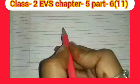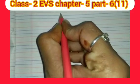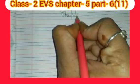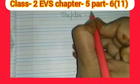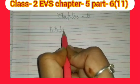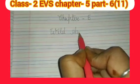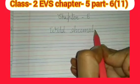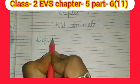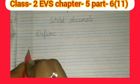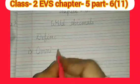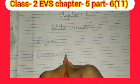Our next question is define the following. Open your copy. Write chapter number five. Write the chapter name: Wild Animals — W, I, L, D — wild animals. Now write the heading: Define. First word is omnivorous — O, M, N, I, V, O, R, E, S — omnivorous. How are omnivorous animals? Write the definition.